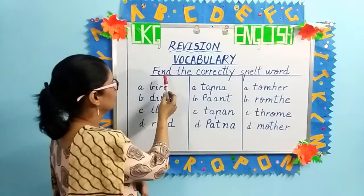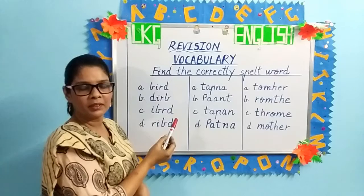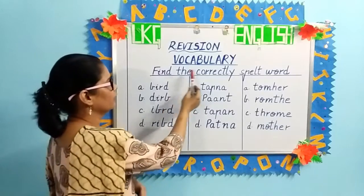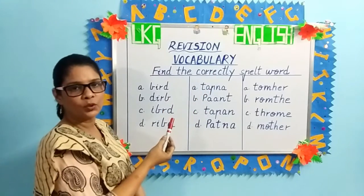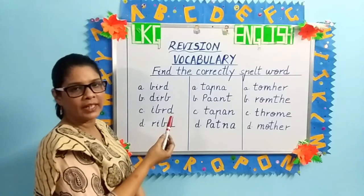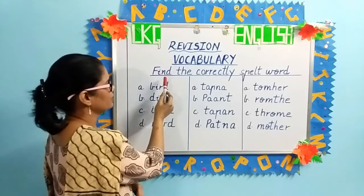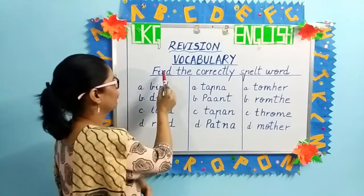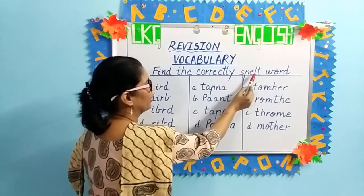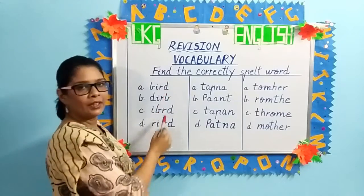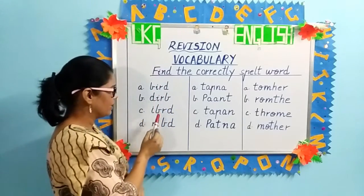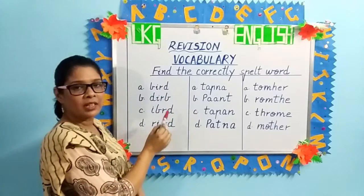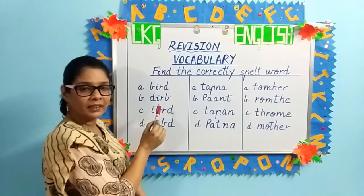Children, since you will be having the online exam and spelling exam, the pattern will be different. These are a few patterns in which you will have to answer your exam. The first pattern is: find the correctly spelt word. You will be given four options — A, B, C, D. Look at each word carefully and choose the right spelling.